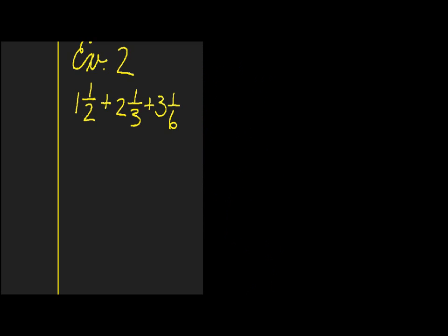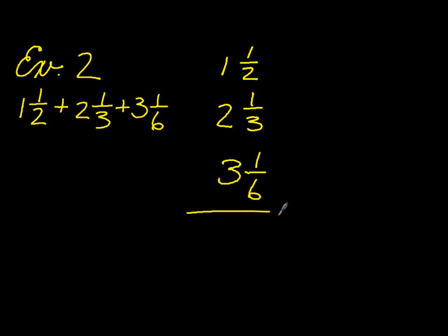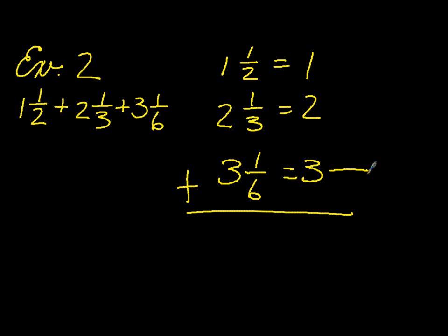Example number two. This time we have some mixed numbers — a little bit more challenging. One and one-half plus two and one-third plus three and one-sixth. Again, write your numbers vertically. Bring over your whole numbers first. And we'll find a common denominator. In this case, it's six.